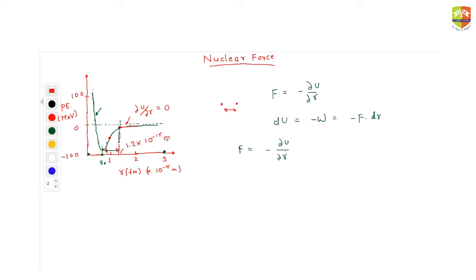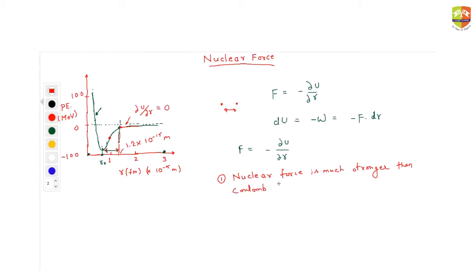That is why we call it a short-range force — it cannot be felt beyond a certain point and suddenly drops to zero. Now write down a few properties of the nuclear force. First: nuclear force is much stronger than the Coulomb force, as you can see from the graph where the slope is almost infinity.